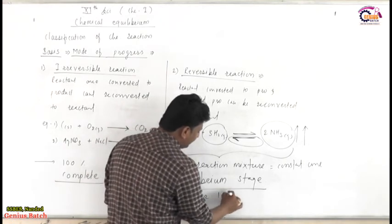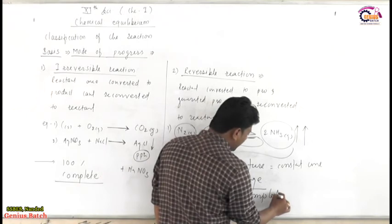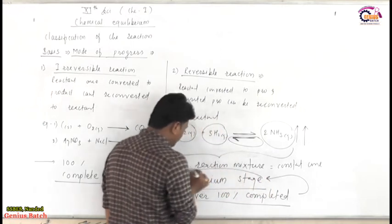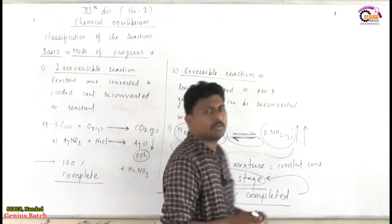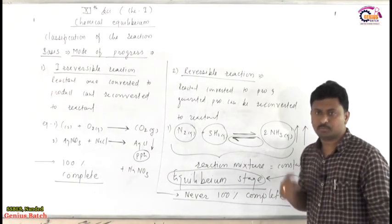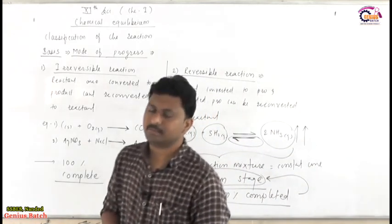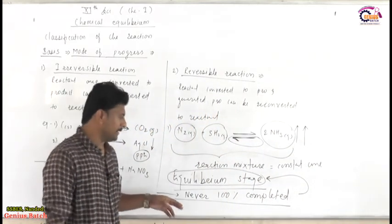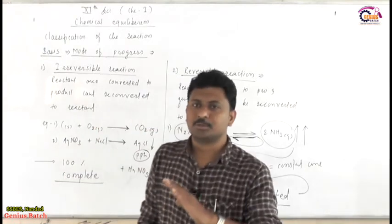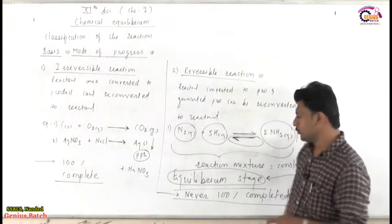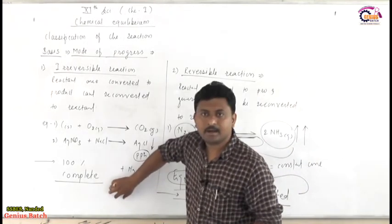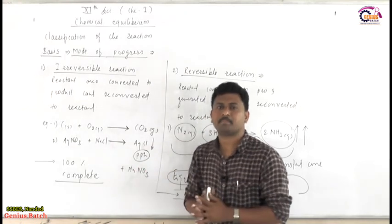A reversible reaction never goes to 100% completion. At the equilibrium stage, both reactant and product are present in the reaction mixture, and the change stops in terms of concentration — though the equilibrium is dynamic in nature. Whereas, an irreversible reaction is 100% completed.